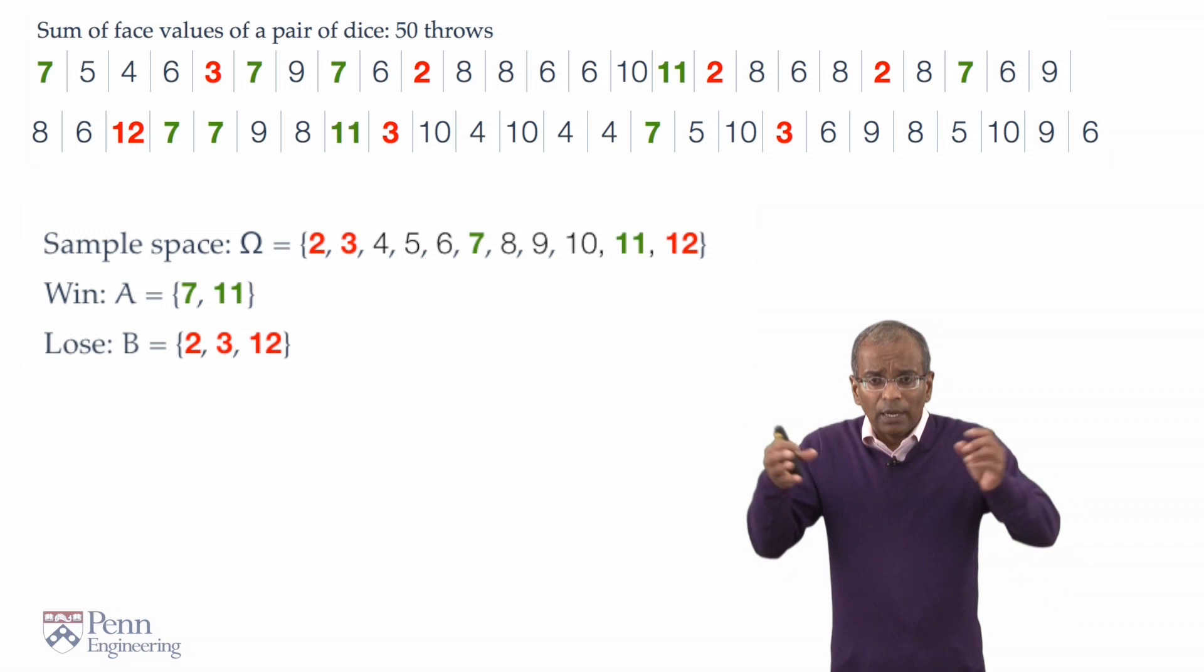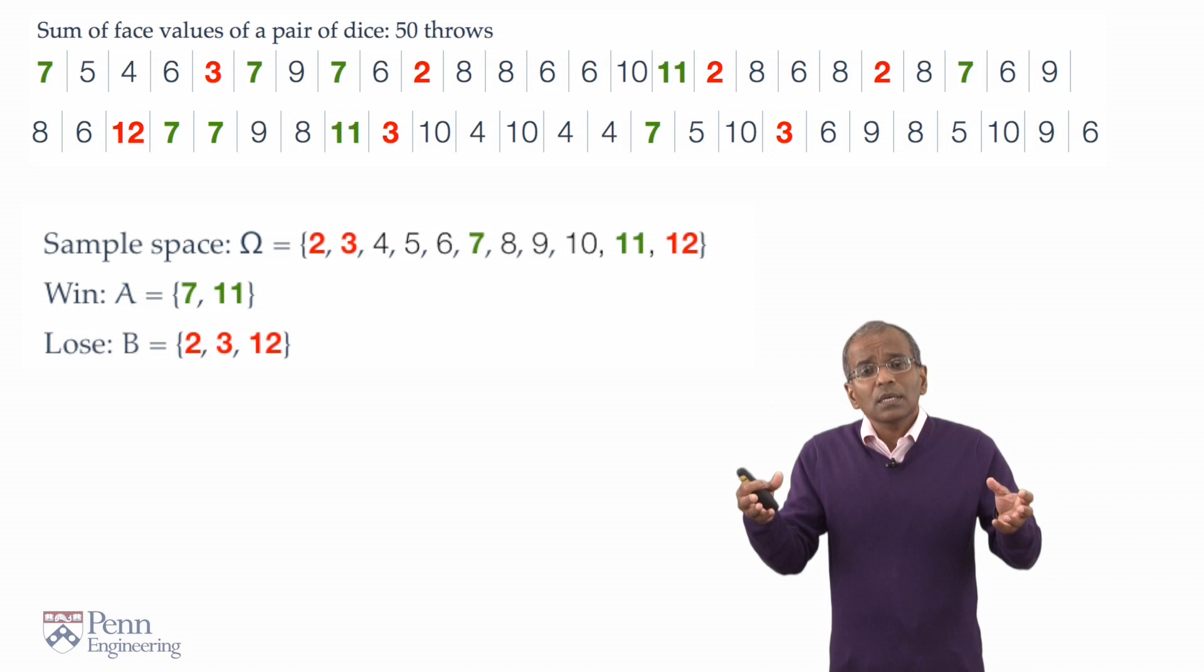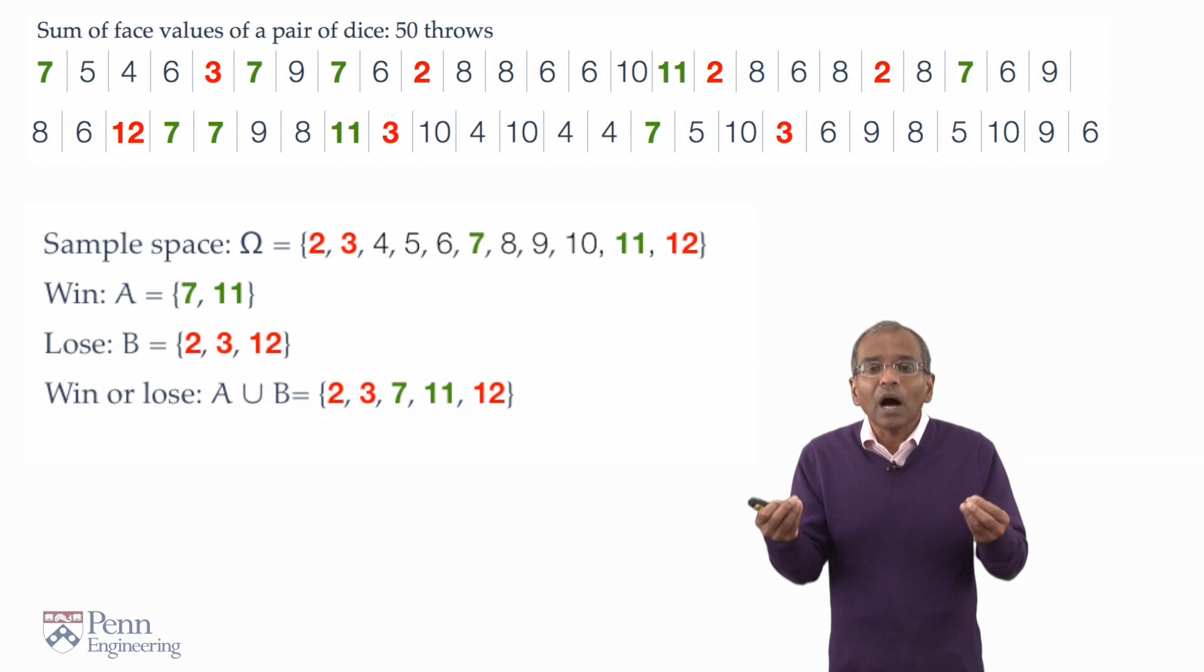Now, one could also ask what about the event that the game terminates on the first throw? Well, for the event that the game terminates on the first throw, either one has to win or one has to lose. Winning and losing are mutually exclusive. They share no outcomes. And therefore, the event that the game terminates on the first throw is the union of these two events, A and B.